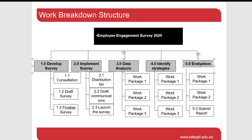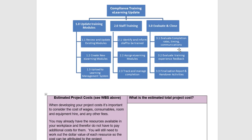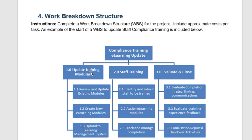In some instances you might decide to do it more as a product style. A product style is what we originally saw on the compliance training project — updating training modules is one type of product, delivering staff training is another, and evaluating and closing is another. In that style, 1.0 and 2.0 may not necessarily be related to each other. Two different people could work on them simultaneously, so you don't have to do 1.0, then 2.0, then 3.0 — they could be in any order.